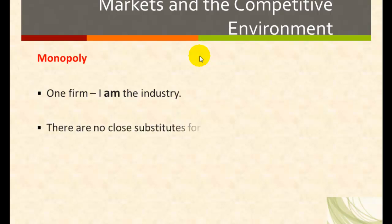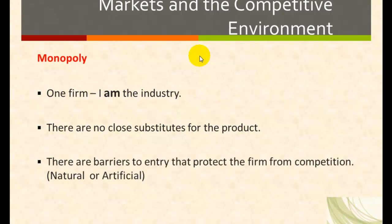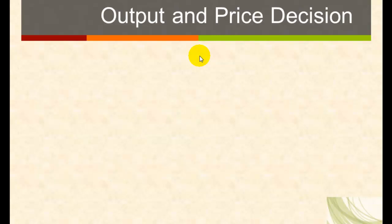In oligopoly there are barriers to entry, and the most important feature is the strategic interactions between firms. In monopoly there is only one firm, which faces the entire market demand function. There are no close substitutes for this product and there are barriers to entry that protect the firm from competition. For output decisions, the equilibrium quantity is determined when firms equate marginal revenue to marginal cost across all market structures.